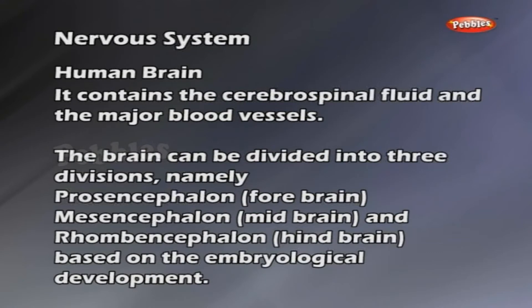The brain can be divided into three divisions, namely prosencephalon (forebrain), mesencephalon (midbrain), and rhombencephalon (hindbrain), based on the embryological development.